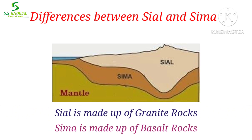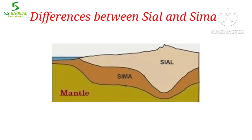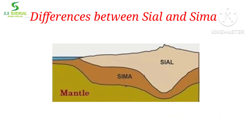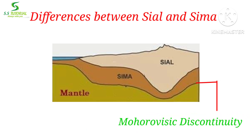Sial is made up of granite rocks, but Sima is made up of basalt rocks. Conrad discontinuity is present below Sial, whereas Mohorovičić discontinuity is present below Sima.